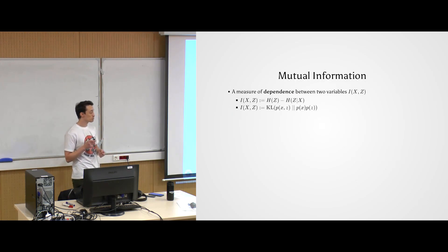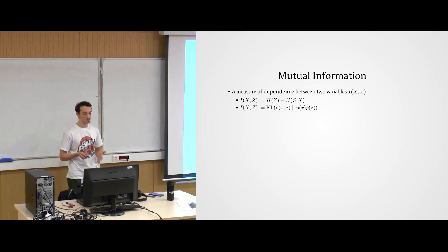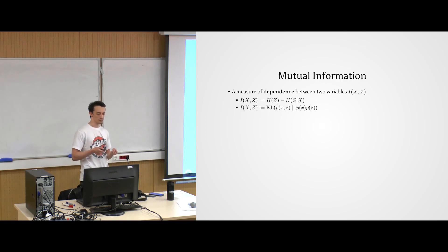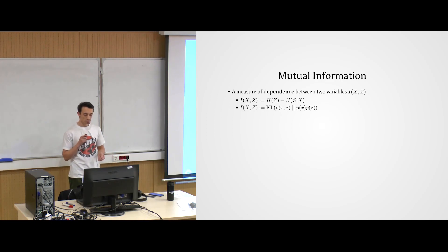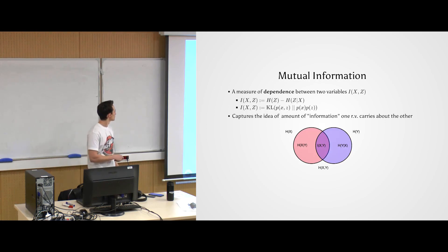The mutual information — what is it good for? It has many different equivalent definitions. One is just the difference of entropies: you subtract from the entropy of Z the entropy of Z conditioned on X, measuring how much uncertainty remains in Z once you know X. It can also be expressed as the KL divergence between the joint distribution and the product of marginals. Its information-theoretic interpretation is that it captures the amount of information one random variable carries about the other, as shown in this Venn diagram.